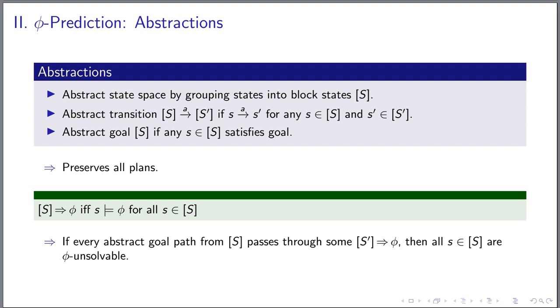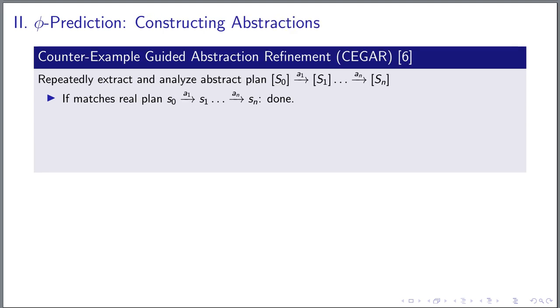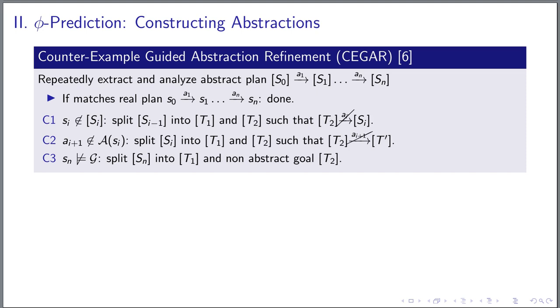To guide the construction of the abstraction towards such situation, we follow a counter-example guided abstraction refinement approach. In a nutshell, CEGAR starts with extracting an abstract solution. If this abstract solution is already a real solution, then the loop terminates. Otherwise, the abstraction is refined by computing a justification why this abstract solution is not a real solution and then splitting an abstract state accordingly.